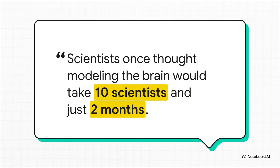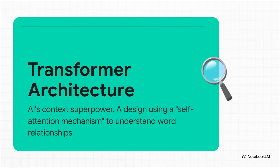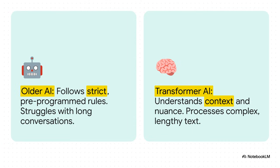Get this — at the famous workshop back in 1956 where the term AI was first invented, the pioneers literally thought they could build a model of the human brain as a summer project. Turns out it's just a little more complicated than that. For decades, one of the biggest challenges for AI was understanding long, complicated sentences. The real game changer was something called the transformer architecture. Its superpower is the self-attention mechanism, which lets the model weigh the importance of different words in a sentence to get the full context. This is precisely why a modern AI can understand a complex question or even get a joke. We went from rigid, brittle AIs that were so easy to confuse, to models that actually feel conversational and intuitive. The transformer is the engine behind pretty much every advanced language AI you use today.